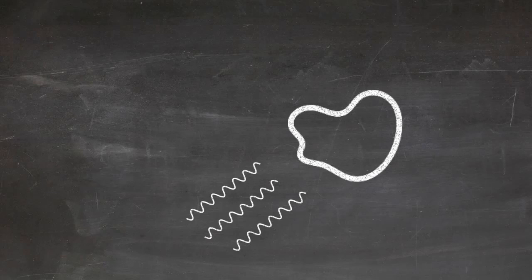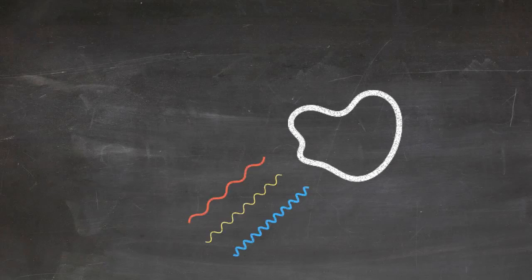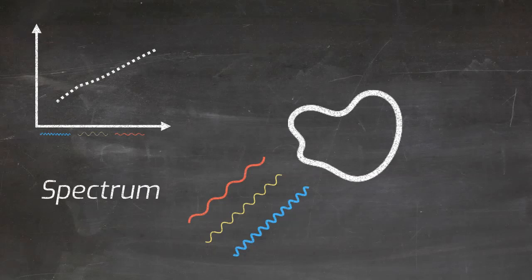We can also look at which wavelengths of light are most reflected by the asteroid. Plotting the intensity of different wavelengths on a graph gives the asteroid spectrum.